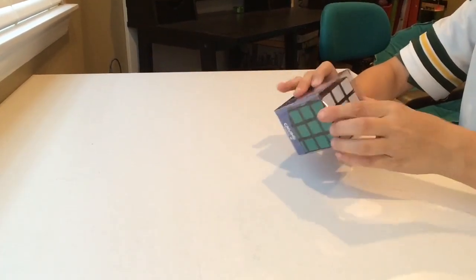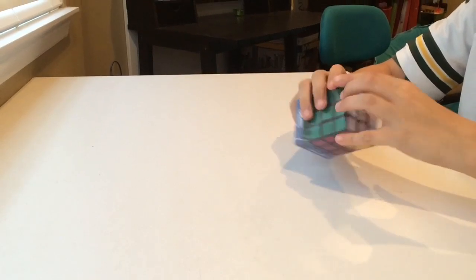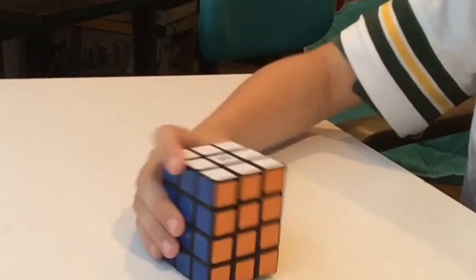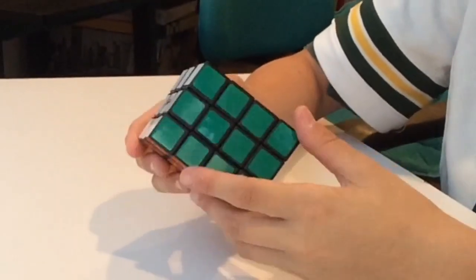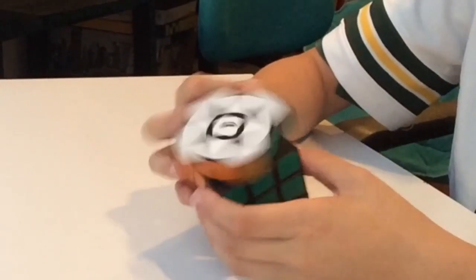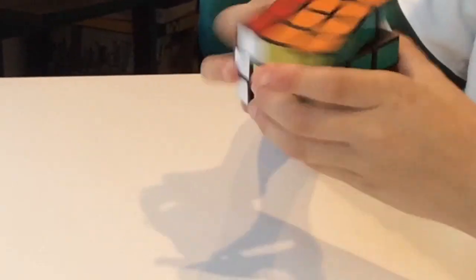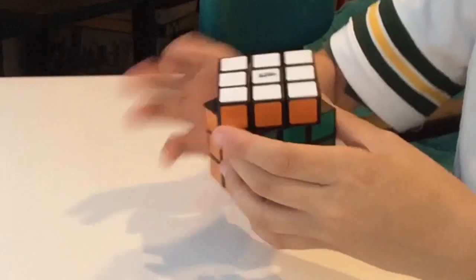This cube is one I really wanted, or should I say cuboid? It is the Calvin's 3x3x4. So here we go, let's get into the first turns. I have the 3x3x5. Oh wow. That's really good. This cube is so good.